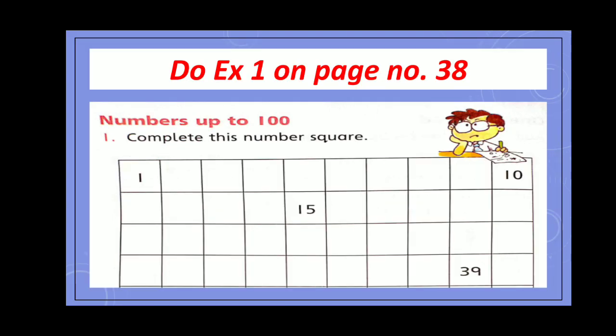Now open page number 38 and do exercise 1. Numbers up to 100. Complete this number square. As you can see, some numbers are missing. Complete it in book.